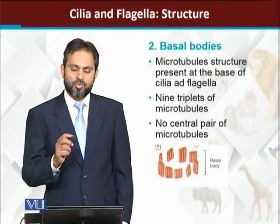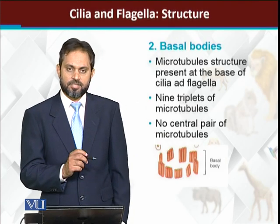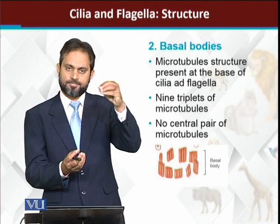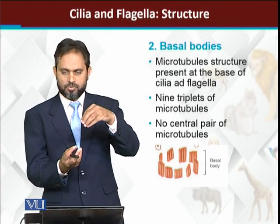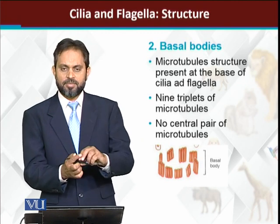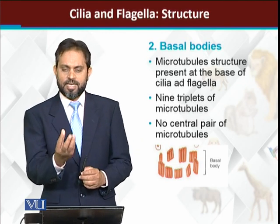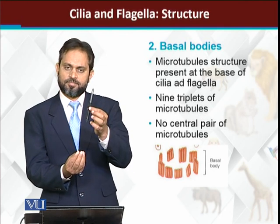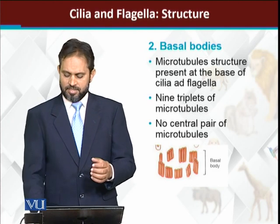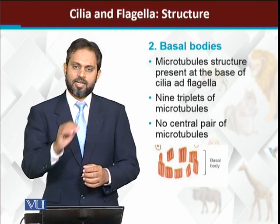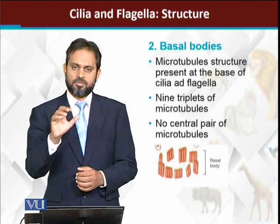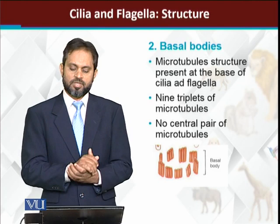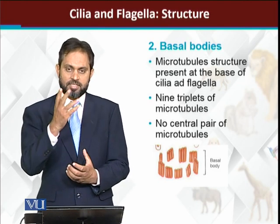Associated with cilia and flagella is an important organelle called the basal body. The basal body is basically the structure from which cilia or flagella originate. Before a cilium forms anywhere, a basal body is present there, and from that basal body the cilium originates. Basal bodies are present just at the inner side of the cell membrane, and cilia and flagella originate or emerge from them.